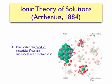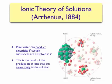It was known in Arrhenius' time that pure water could conduct electricity if certain substances were dissolved in it. In order for a substance to conduct electricity, it has to have the ability to allow charged particles such as ions or electrons to move through it. Arrhenius proposed that a solution is able to conduct electricity if there are ions in the solution.